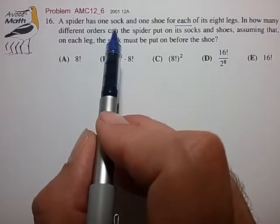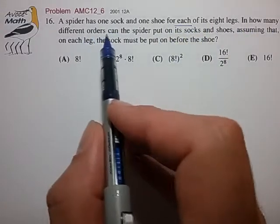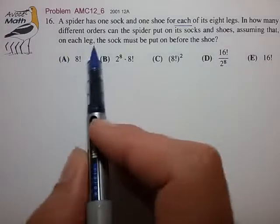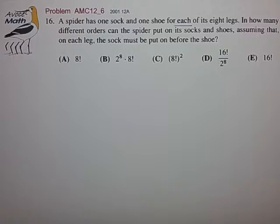A spider has one sock and one shoe for each of its eight legs. In how many different orders can the spider put on its socks and shoes, assuming that on each leg the sock must be put on before the shoe? Well that's quite a complicated problem description and I must say this is one of the classic counting problems from the AMC and I think it's very difficult to do this problem, the full complete problem, correctly.